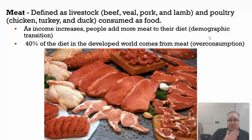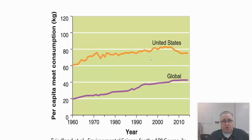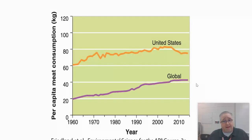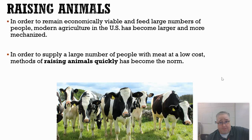As countries transition through demographic transition into higher stages, people tend to eat more meat. In the US, meat consumption has grown over the last 50 or 60 years, but the rest of the world is increasing their meat consumption even faster — they're beginning to catch up, largely because many countries are moving into Stage 3 of demographic transition.